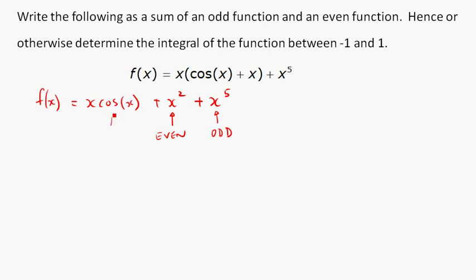And I know that x to the 5 is odd, it's an odd power of x. And cos, if you look at the graph of cos, it's symmetric about the y-axis so that bit is even. But x is x to 1 so that's odd. So I've got odd times even for that first expression. Now odd times even gives us an odd result. So that means that if I split this up in odd and even parts, x cos x plus x to the 5 that bit will be odd, and x squared that bit will be even.